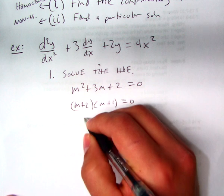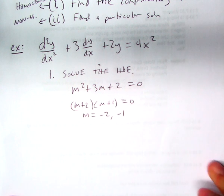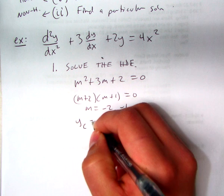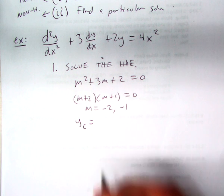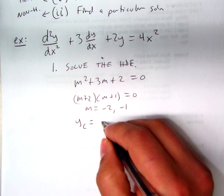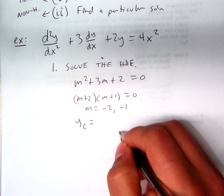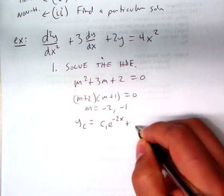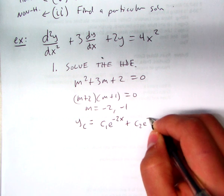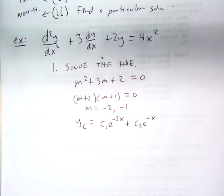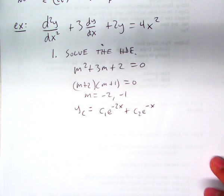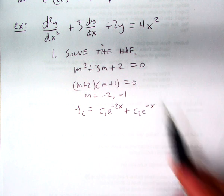So we get two roots, negative 2, negative 1. So this is what we call the complementary solution, which would be C1e to the minus 2x plus C2e to the minus x.